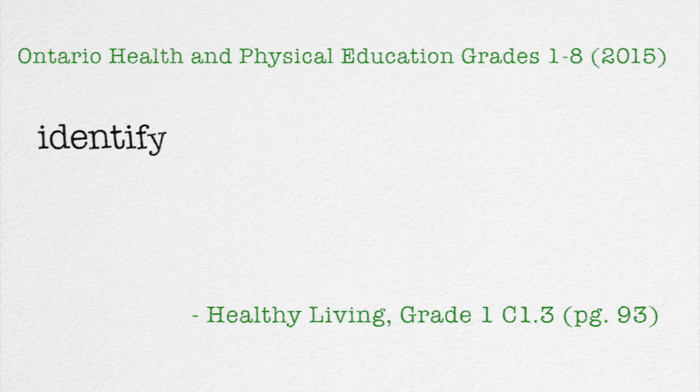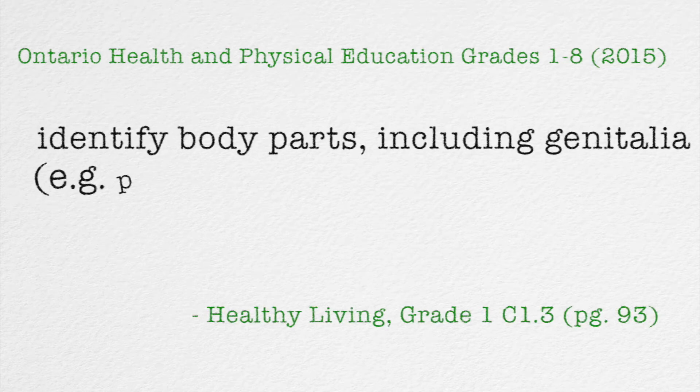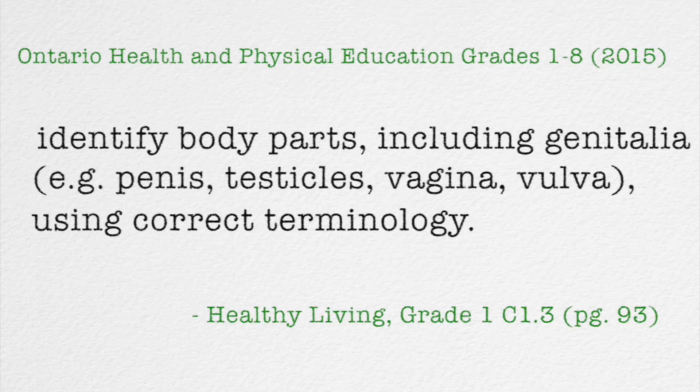The Health and Phys Ed curriculum for grades 1 through 8 outlines the following objectives for grade 1: identify body parts including genitalia using correct terminology. This is the first sexual health learning objective in the entire curriculum. It's the only one for first grade, and it is really simple, so we are going to keep our activities simple as well.